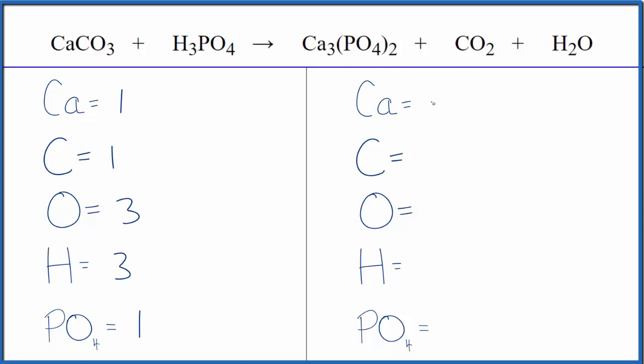In the products, three calciums, we have one carbon, we have two, plus we have the one oxygen here in the water. That gives us three. Again, we're going to ignore the phosphate for a moment. Hydrogens, two of those. And then we have the phosphate here, we have two phosphates. So we're going to put a two here.